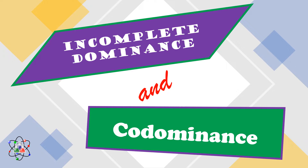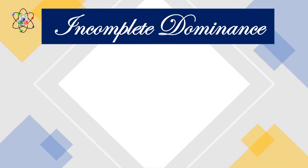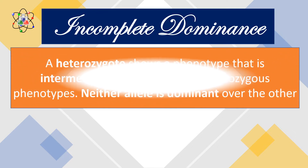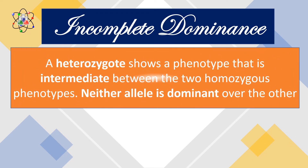Let us start with incomplete dominance. Incomplete dominance follows the non-Mendelian pattern of inheritance wherein a heterozygote shows the phenotype that is intermediate between the two homozygous phenotypes. Neither allele is dominant over the other.